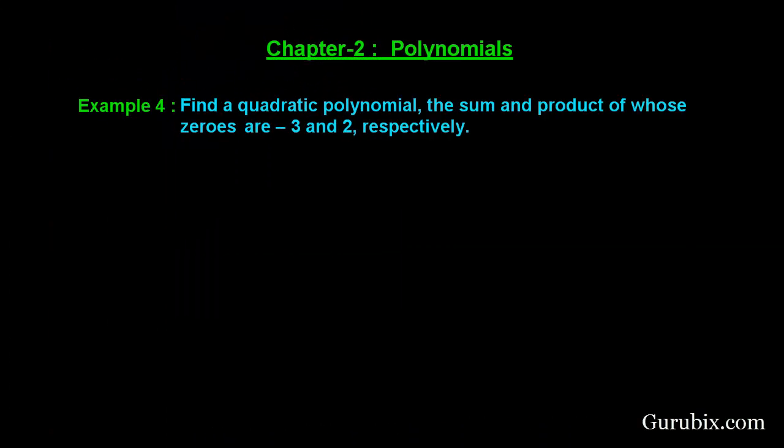Welcome friends. In this video we shall solve example number 4 of chapter 2 of class 10. The example is as follows: Find a quadratic polynomial, the sum and product of whose zeros are -3 and 2 respectively. Let us see how to solve this example.